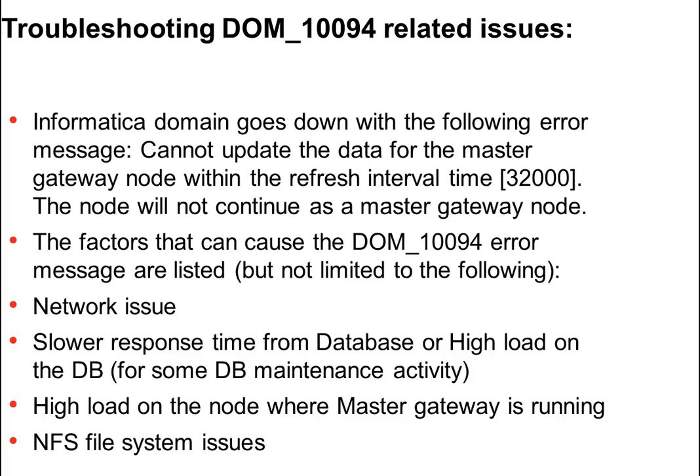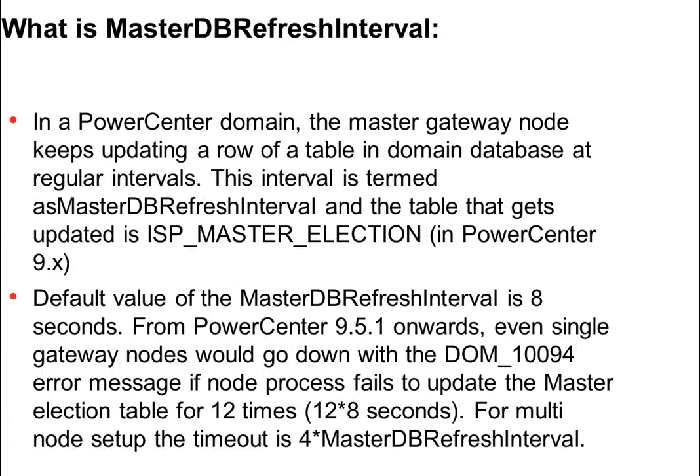The factors that cause DOM_10094 error messages include, but are not limited to: network issues, a slower response from the DB, high load on the DB, high load on the node where the master gateway is running, or an NFS file system issue. The root cause can be found using a resource utilization report like SAR, or a JDBC spy log. As a workaround, we can increase the master DB refresh interval and master update interval.